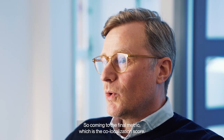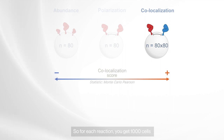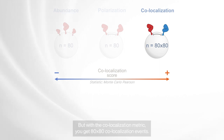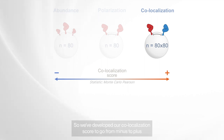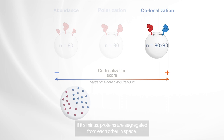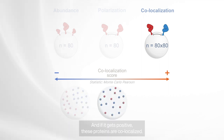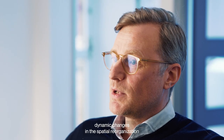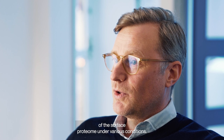Coming to the final metric, the co-localization score: for each reaction, you get 1,000 cells of spatial information and 80 proteins in each cell. You get the abundance of 80 proteins, the spatial distribution of 80 proteins, and with the co-localization metric, you get an 80 by 80 co-localization matrix. The co-localization score goes from minus to plus — if it's minus, proteins are segregated from each other in space; if near zero, randomly distributed; and if positive, the proteins are co-localized. These metrics describe dynamic changes in the spatial reorganization of the surface proteome under various conditions.